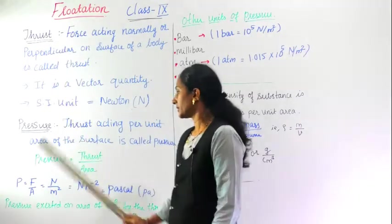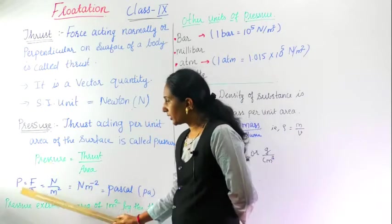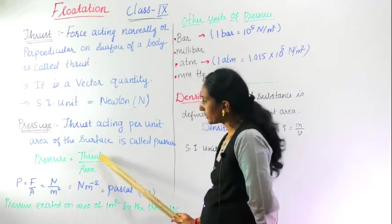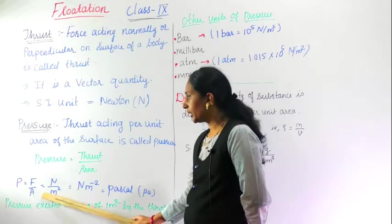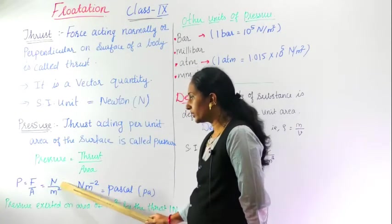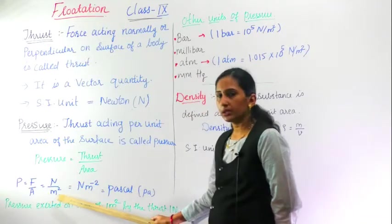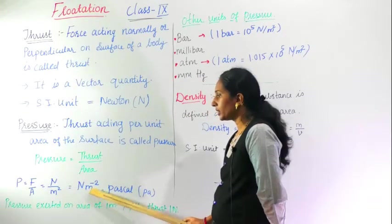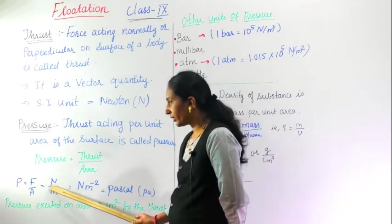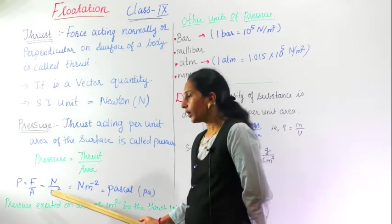Here, pressure P equals thrust. Instead of thrust I have written force F divided by area A. The unit: force is Newton, area's unit is meter square, which can also be written as Newton meter minus 2. Why minus 2? When it is at the denominator, if you are taking above, this 2 sign gets converted into minus 2.